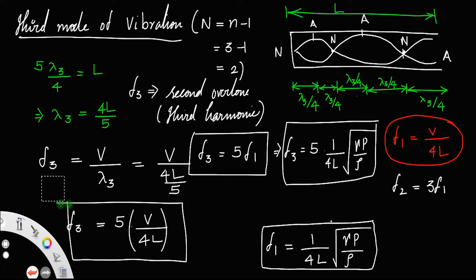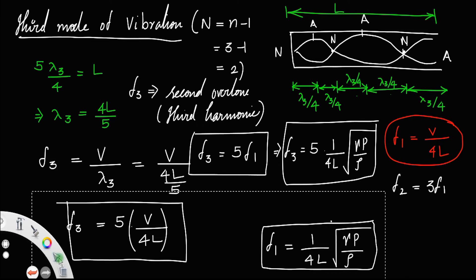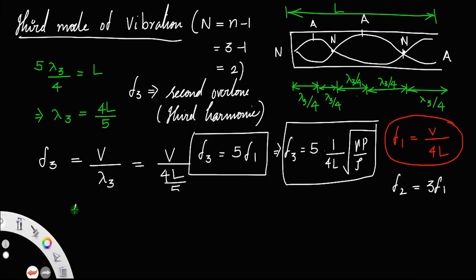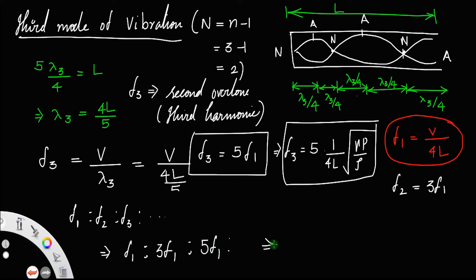Comparing the frequencies of the different modes — f1 to f2 to f3 — we have f1, then 3f1, then 5f1, and so on. Cancelling the common factor, the ratio is 1:3:5. In this situation, only odd values appear, so the frequencies in a closed pipe are odd-number multiples of the fundamental frequency.